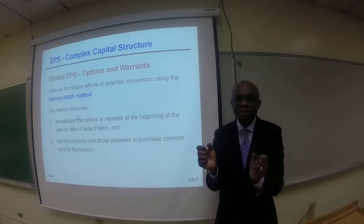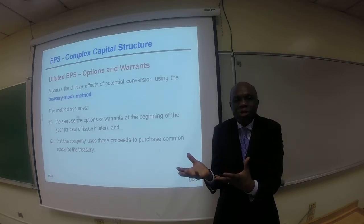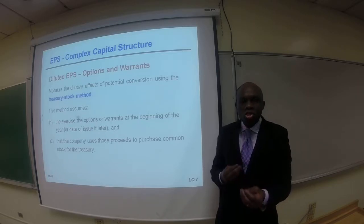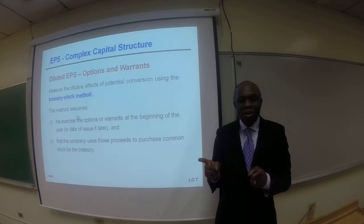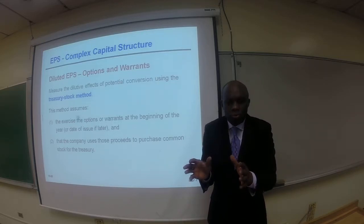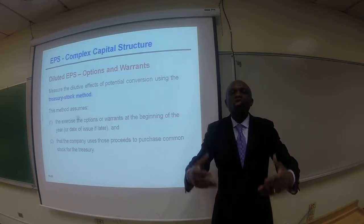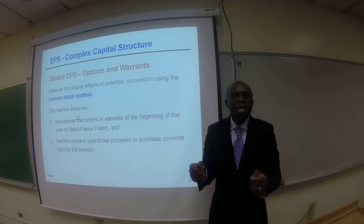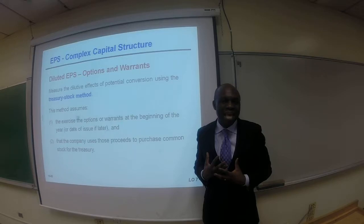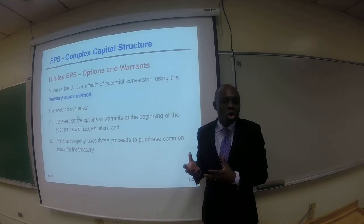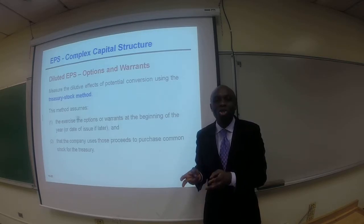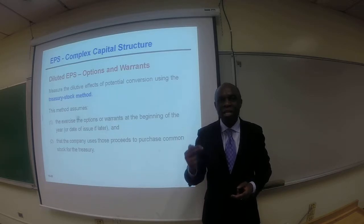The assumption here is that the investor holding these options or warrants exercises their right to buy the company stock. When they exercise their right, they have to pay for the stock they are purchasing. For the calculation of diluted EPS, this is all an assumption — that the options and warrant holders are going to exercise their right. Then we have to follow through with that assumption: if that is the case, the cash that the company receives — what do we do with that cash? We assume that we use that cash to purchase the company's stock in the stock market.